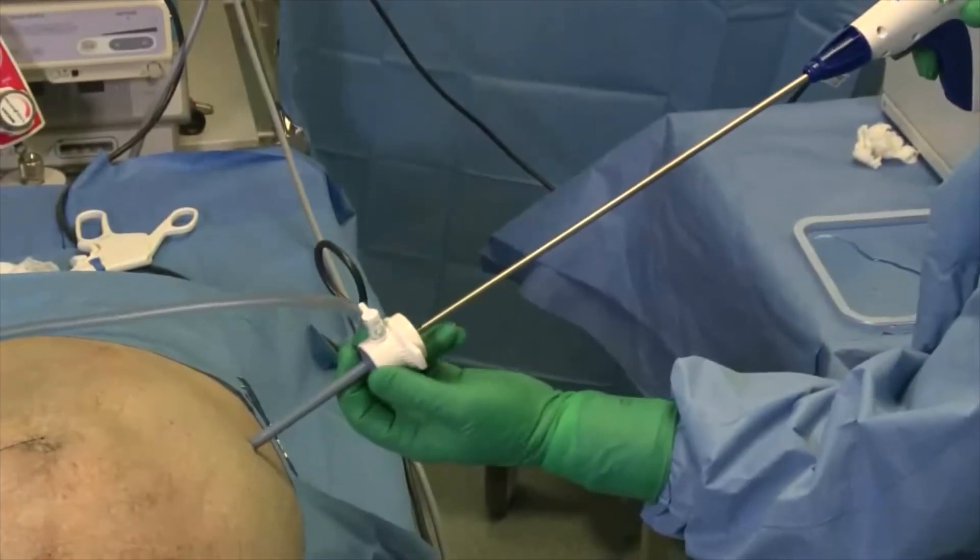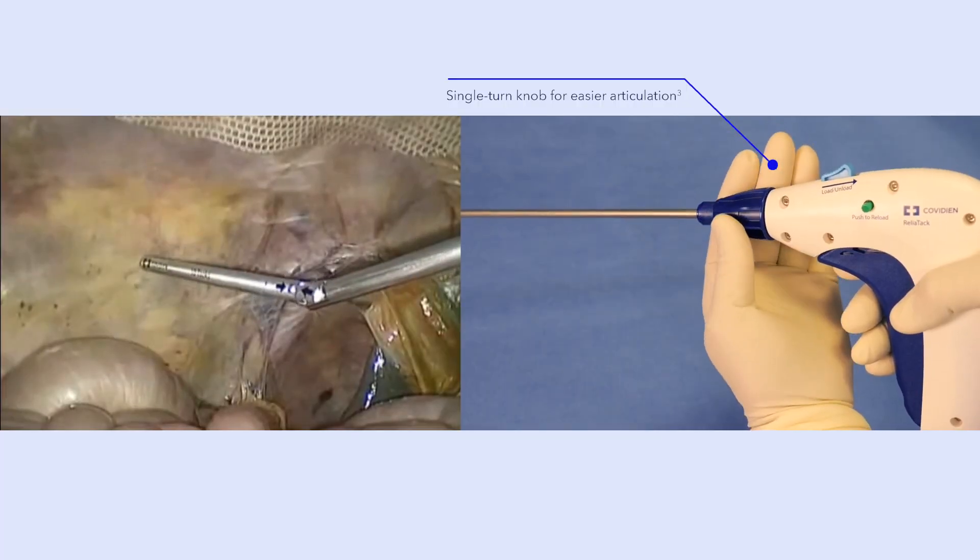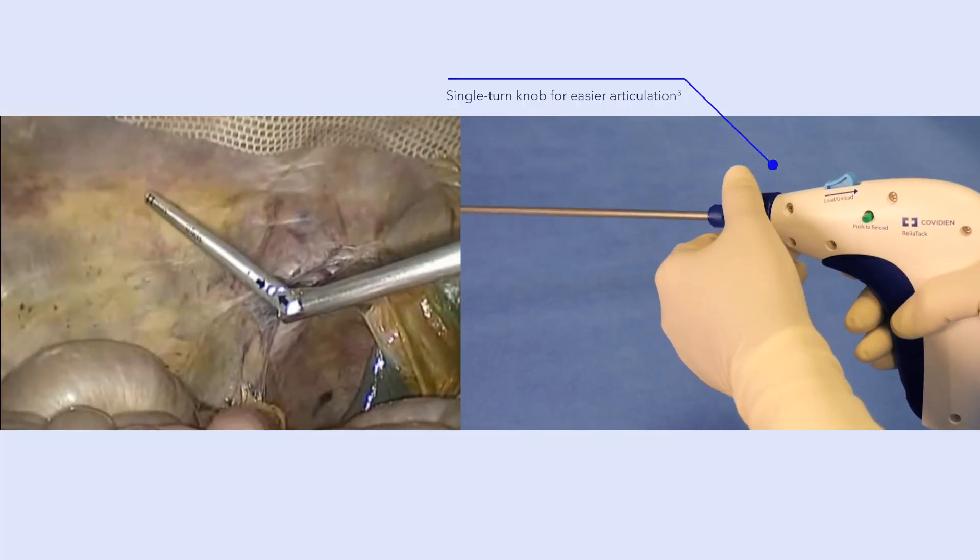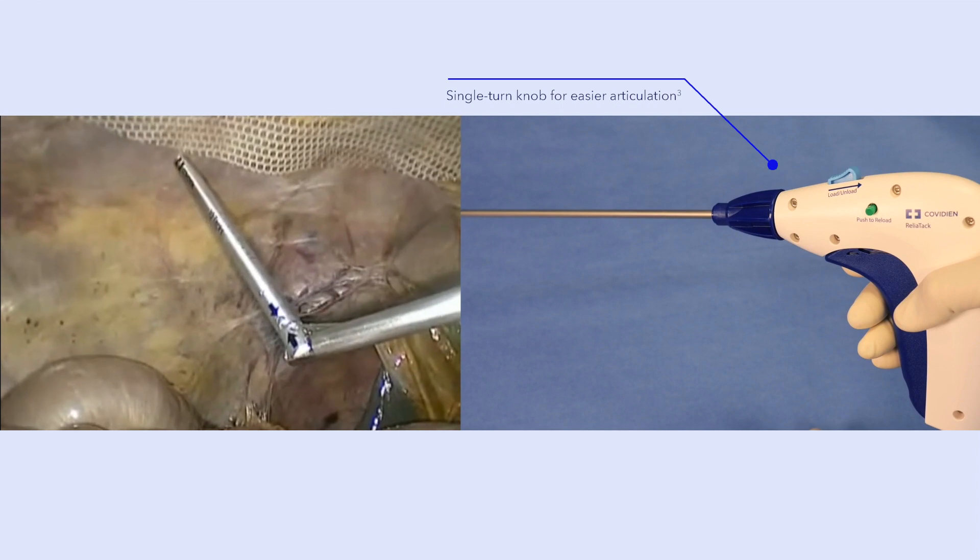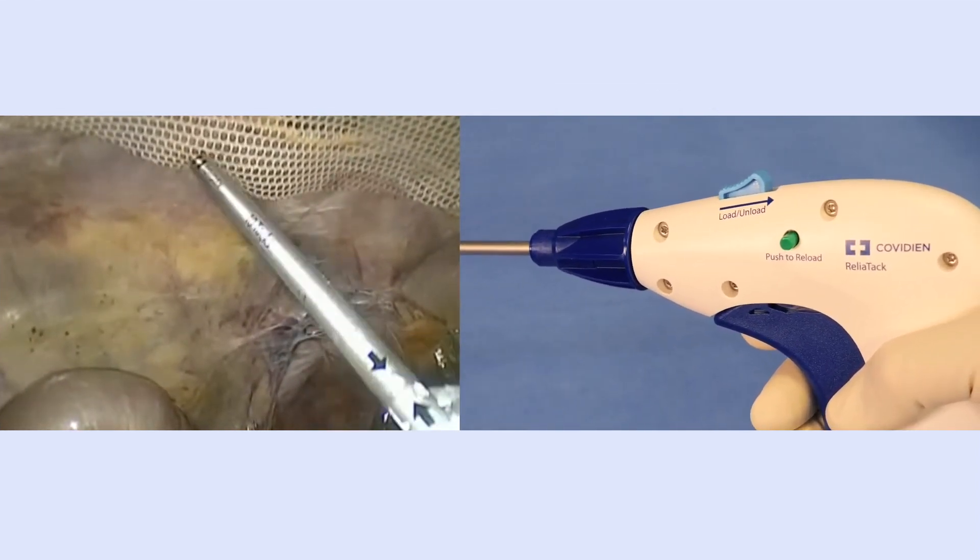Insert the device through a 5mm or larger cannula. Articulate the device to 65 degrees by turning the articulation knob clockwise with a single turn. Ensure that the device is in fire mode with the green toggle button exposed.